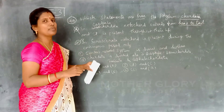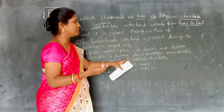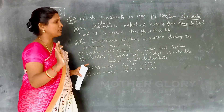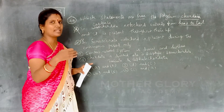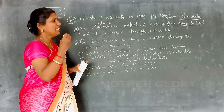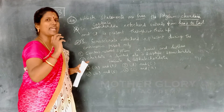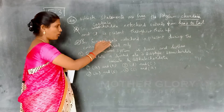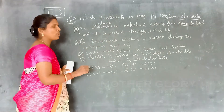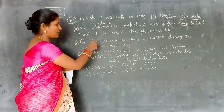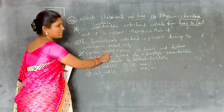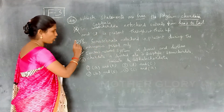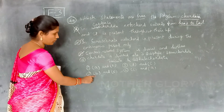Next, the central nervous system. It is dorsal and hollow. Dorsal means it is on the back side, and hollow means it has an empty space. So the option stating the central nervous system is dorsal and hollow is correct. This option is correct.